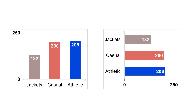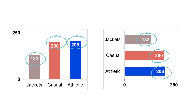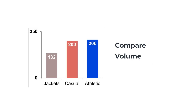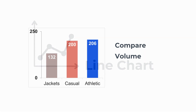Bar charts are great when you want to show precise values because there's usually room to put the data labels directly on the bars. So our main takeaway about the bar chart is that it is used to compare values using the height of the bars, and the emphasis is on volume or size, such as your sales volume as shown here.